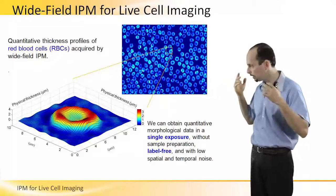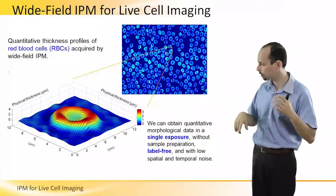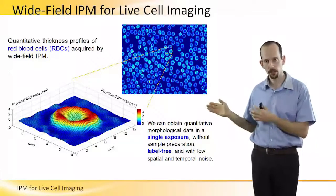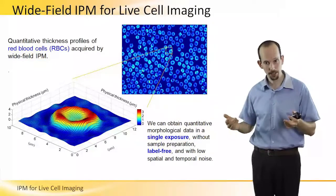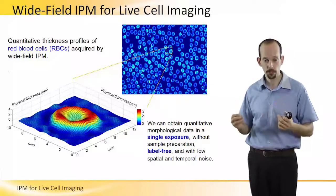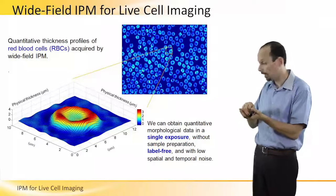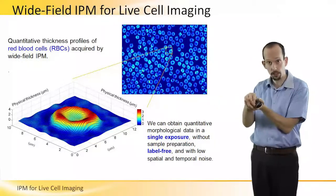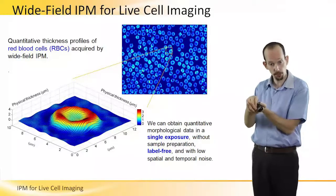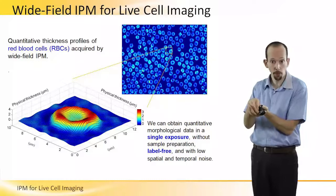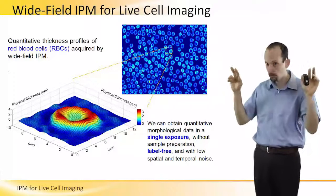Furthermore, I can use each cell in the field of view in order to reconstruct its physical thickness. For red blood cells, this is even simpler because I'm not recording only the optical thickness — I'm recording the physical thickness. Since red blood cells do not have a nucleus, I can assume a certain index of refraction for the entire cell. So the phase profile recorded is actually proportional to the physical thickness of the cell, and I can get a 3D image.